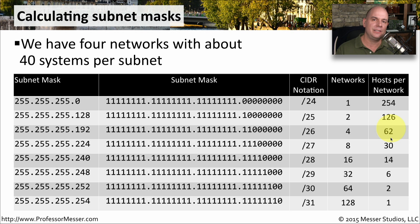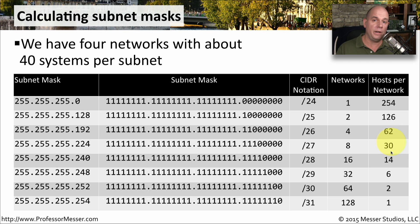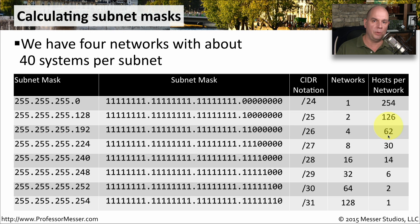Looking at the next option, 255.255.255.224 (/27), uses three more bits and gives eight networks, but only 30 hosts per network — not enough for our 40 devices. So the correct choice is the /26 subnet, giving us four networks and 62 hosts per network.